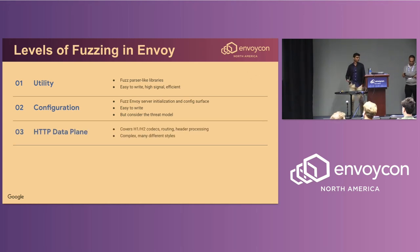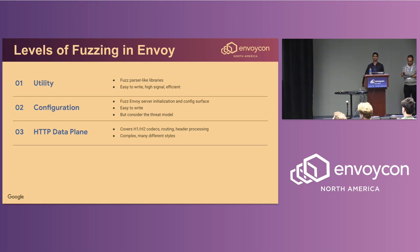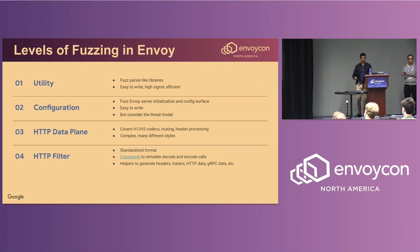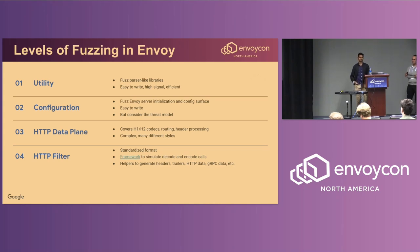The third type is HTTP data plane fuzzers, which fuzz various portions of the data plane from HTTP codecs to routing and header processing. They're complex and come in many styles. We found these were not very accessible to the open source community, so we improved this by creating a new category: HTTP filter fuzzers. These follow a standardized framework to fuzz any HTTP filter. We created a framework to simulate decode and encode calls to the filter under test and added helpers to generate headers, trailers, HTTP data, and gRPC data. With this, any open source contributor or filter maintainer can add their own fuzz tests.